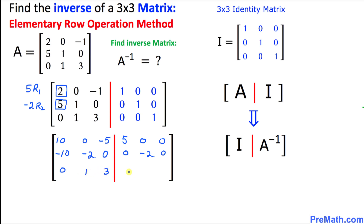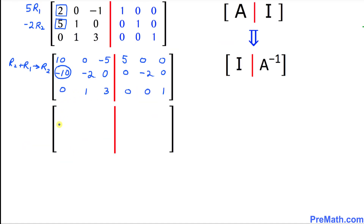In the next step we are going to make the circled entries 0. We add R2 to R1 and store it in row 2. Once we do this, the second row becomes 0, 0, 0 on the left and 0, 0, 0 on the right. The third row stays the same.